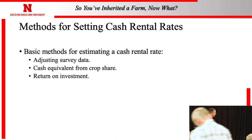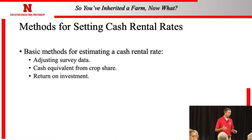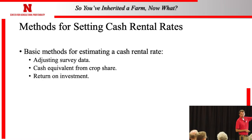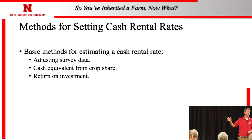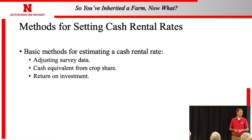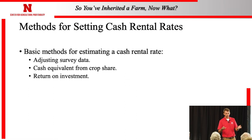There are different ways to figure this out. Three different approaches on how to set cash rental rates are up on the screen right now. You can take regional or county cash rent information and adjust it down to the farm level. You can also do something called cash equivalent from crop share or hay share — you take a crop share and make it into a cash rental rate. The final example: land is an investment, every investment has a return, and if you know what it's worth and multiply it by a rate of return, that could be a cash rental rate.